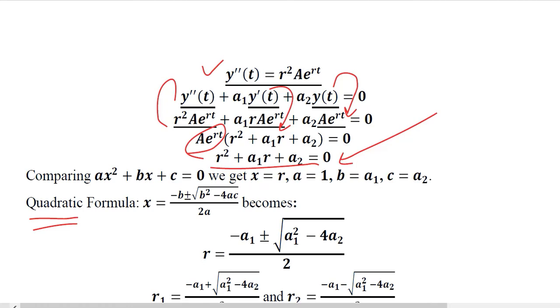Now this equation doesn't have any derivative so it is easy to solve and it is basically a quadratic equation that we can solve using the quadratic formula. But before that we can see that instead of X we have R, instead of A we have 1, the value of B is A1 and value of C is A2.